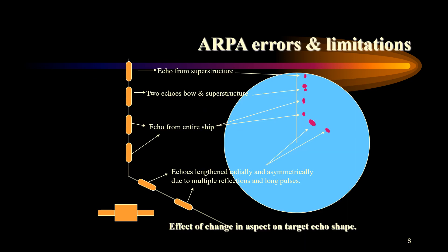The position of the target in the echo shape is along the centerline of the echo at the leading edge. Some ARPAs allow the operator to choose between leading edge or center of echo tracking. The center of the echo gives a steadier vector display but is not as accurate as the leading edge, particularly for large targets. Using a longer pulse length with center tracking will increase the error in track information. Some large targets will show two echo centers, particularly when the target changes its aspect with respect to the antenna.